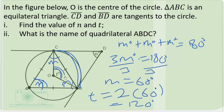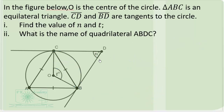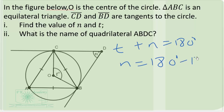Note that T plus N should add up to 180 degrees, because the angle the radius makes with the tangent is 90 degrees. So T plus N equals 180 degrees, and N equals 180 minus T. Since T is 120 degrees, N equals 60 degrees.